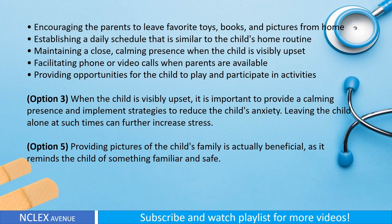Additional interventions include maintaining a calm presence when the child is visibly upset, facilitating phone or video calls when parents are available, and providing opportunities for the child to play and participate in activities. Option three: When the child is visibly upset, it is important to provide a calming presence and implement strategies to reduce anxiety — leaving the child alone at such times can further increase stress. Option five: Providing pictures of the child's family is actually beneficial, as it reminds the child of something familiar and safe.